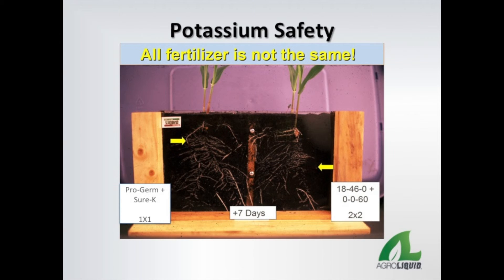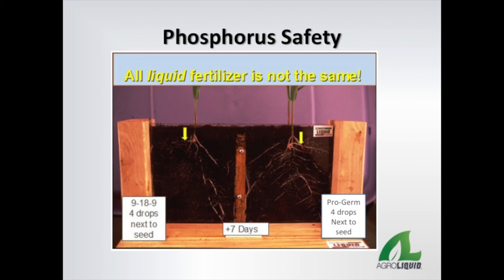These photos show grow-out boxes comparing agri-liquid products to several conventional potassium and phosphorus products. The yellow arrow points to the application point for each fertilizer, and applications are based on the position of the seed. In this photo, we see Progerminator Plus Sure-K compared to an equivalent rate of DAP and potassium chloride, or 0-0-60. Notice how the roots avoid the application zone of the DAP plus 0-0-60, but grow to and through the application zone of the agri-liquid products. Progerminator 9-24-3 was also compared to conventional liquid phosphate fertilizer 9-18-9 applied next to the seed, with corn roots growing to and through the treated zone of the agri-liquid product, while root growth is restricted in the zone of the competitive product.